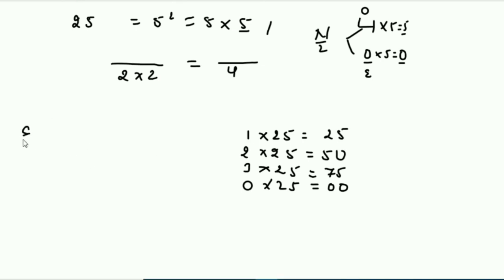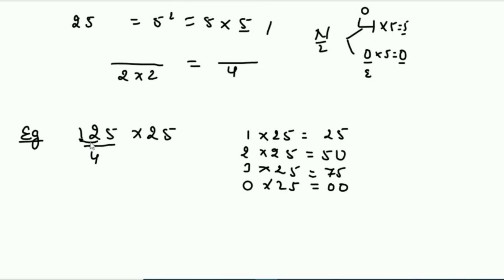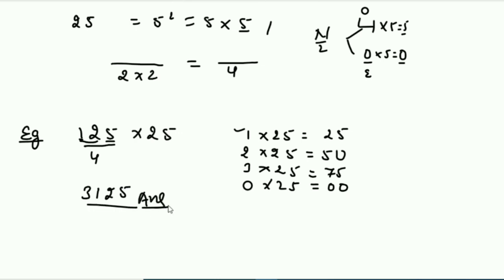Let me take an example: 125 multiplied by 25. I divide 125 by 4. Can I subtract 4 from 1? No. Take two digits: 12 divided by 4 is 3 — 12 gone, zero left. Bring down 5: 5 divided by 4 is 1, remainder 1. Since remainder is 1, last two digits are 25. So the answer is 3125.